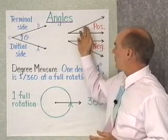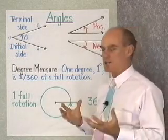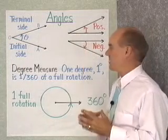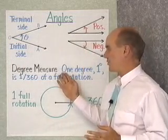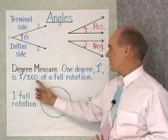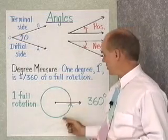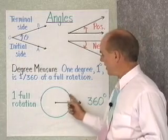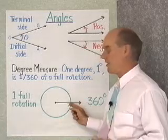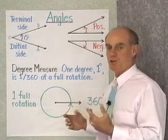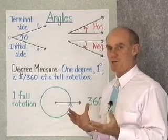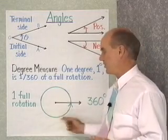If an angle is measured in a counter-clockwise direction, it has positive measure. In a clockwise direction, we say it has negative measure. As far as degrees go, one degree is 1/360th of a full rotation. So if I take a ray and rotate it around its vertex one complete rotation, the angle I end up with is 360 degrees.